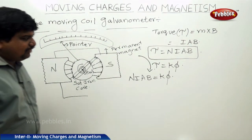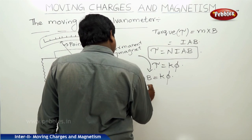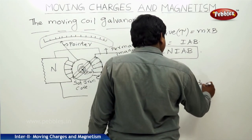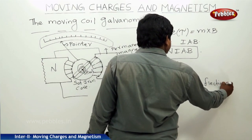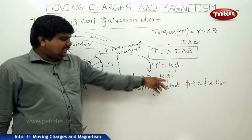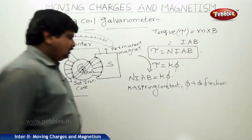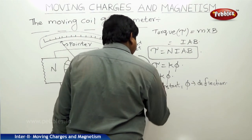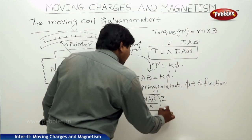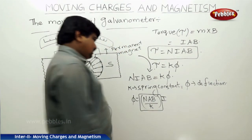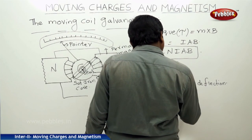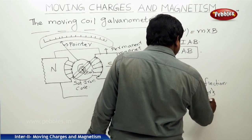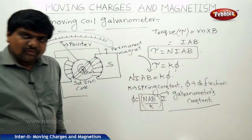Here K is the spring constant and φ is the deflection. Finding the deflection by balancing the two torques, phi equals (N·I·A·B divided by K) times I. The quantity N·A·B divided by K is called the galvanometer constant, which gives the sensitivity of the galvanometer.